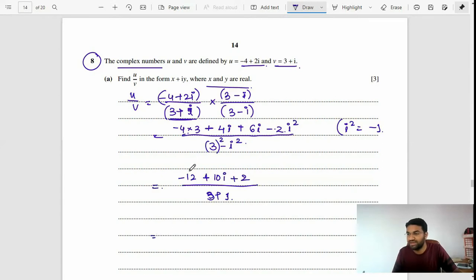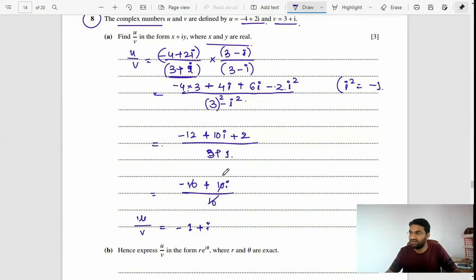Negative 12 plus 2 means negative 10 plus 10i over 10. You can cancel out the 10s, so at the end u over v equals negative 1 plus i. This is a three mark question, so each step you will get marks.